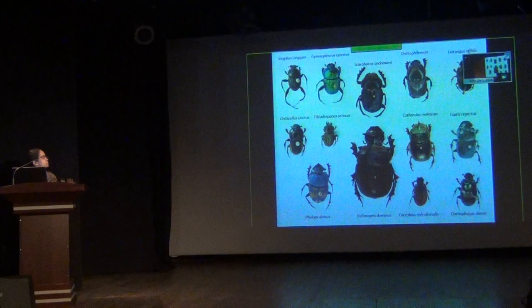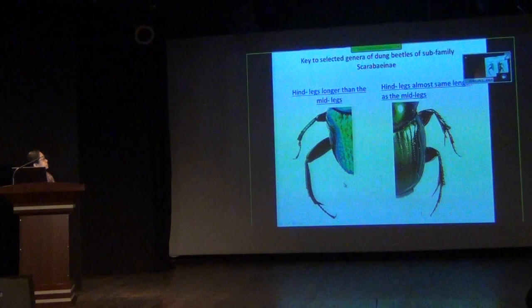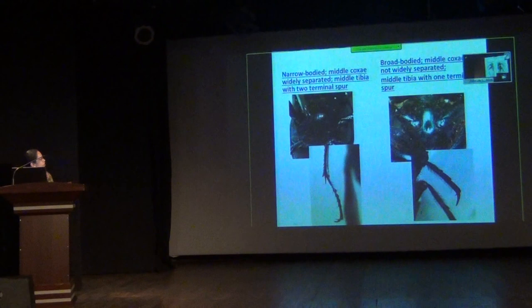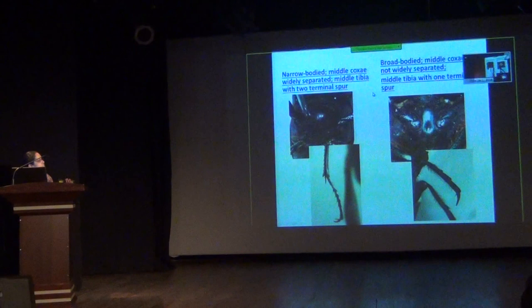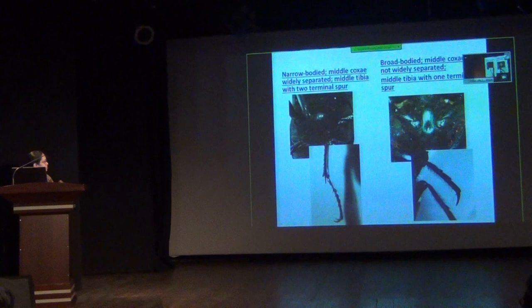It will be difficult to follow the key in such a short presentation, but I have illustrated keys for each genus with pictures for each character. To identify rollers: if the hind legs are longer than the mid legs, it is a roller. Among rollers, if it is narrow-bodied and the middle coxae are widely separated, and the middle tibia has two terminal spurs, you can say it is genus Sisyphus.